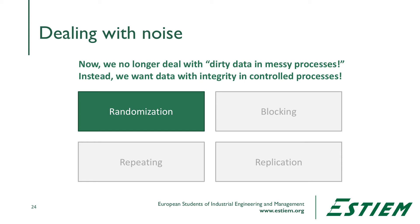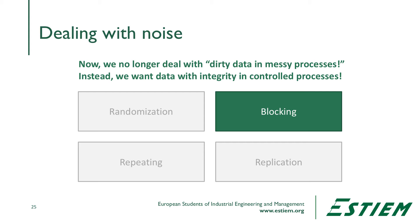The second thing we can do is block. If we have a known and controllable noise source — such as raw material from one supplier versus another, or two different shifts doing the same job — we can block and systematically eliminate that effect. We run the same experiment within each block, for example at supplier one and supplier two, and then combine the results to determine which supplier is better.